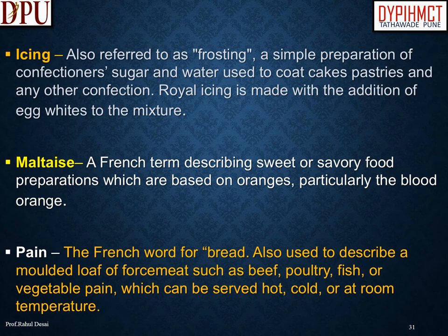Royal icing is made with the addition of egg whites to the mixture. Maltaise is a French term describing sweet or savory food preparations based on oranges, particularly the blood orange. Pain is the French word for bread, also used to describe the molded loaf of force meat — such as beef, poultry, fish, or vegetable pain — which can be served hot, cold, or at room temperature.